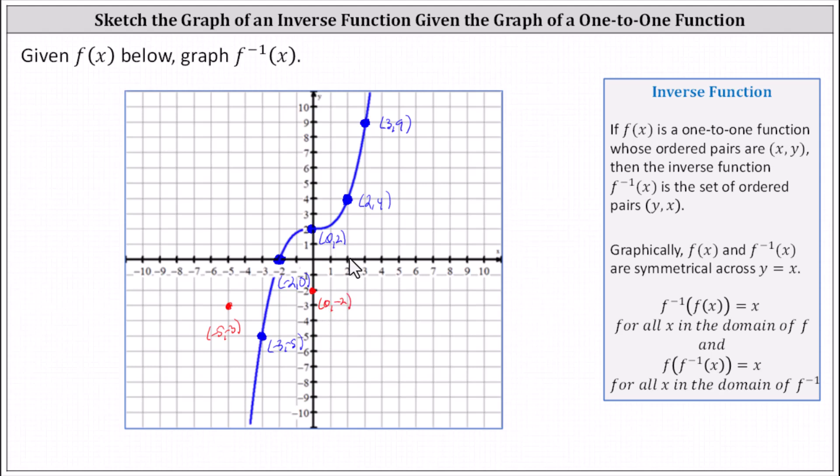Next, we'd have (2, 0), followed by (4, 2). Again, I'm simply interchanging the x and y values for the points that we found on f(x). And finally, we have (9, 3).